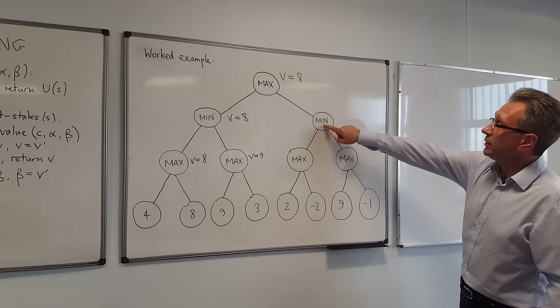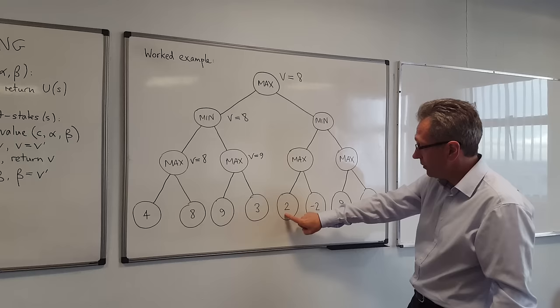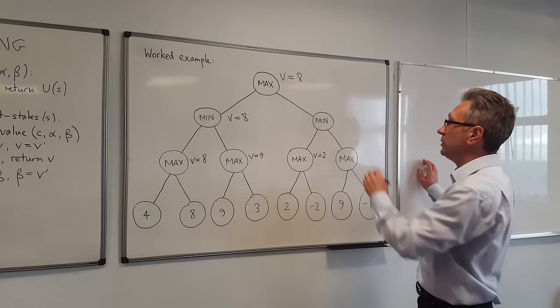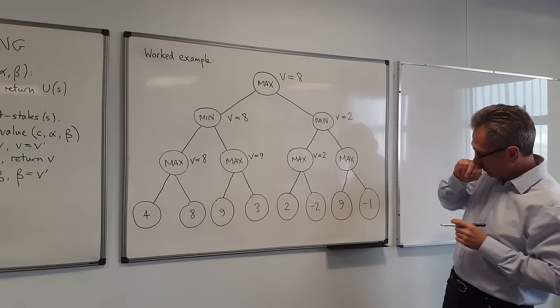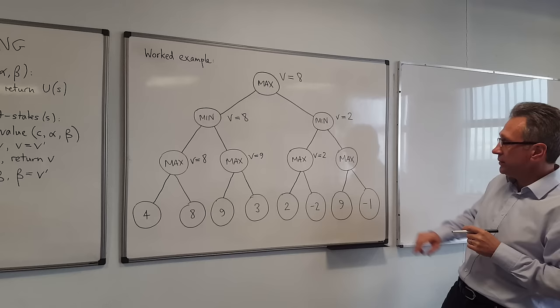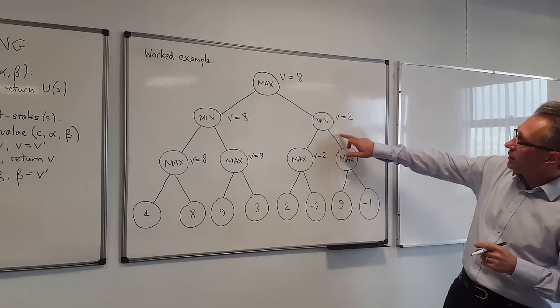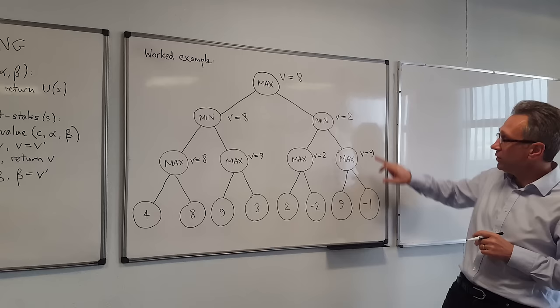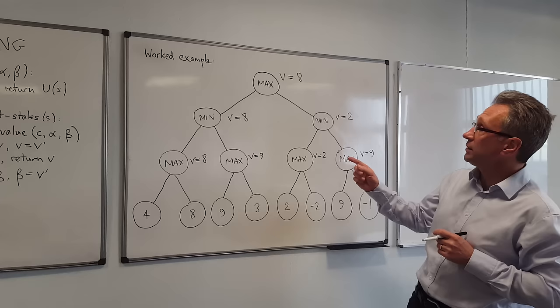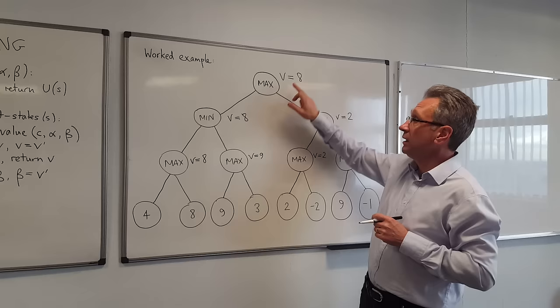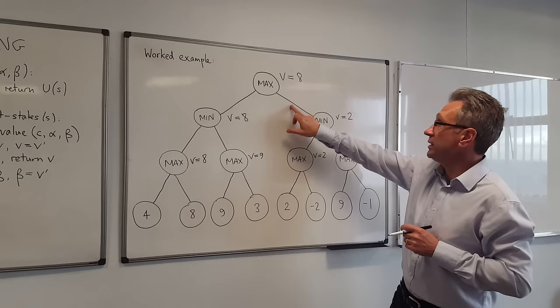We call MinValue here and MaxValue here. When we call MaxValue here we get the maximum of 2 and minus 2, so the value is currently 2, and this gets returned to this MinValue, so the value here is currently 2. We then call MaxValue on this state. We have a value of 9 and minus 1 at the terminal nodes, so the value of this MaxNode is 9. That gets returned but doesn't change the value of this MinNode — it's still 2. That gets returned to the top level; it doesn't change the top-level value, it's still 8, and that tells us the value of this game to Max is 8. Max should take this action to get 8, rather than this action to get a value of 2.